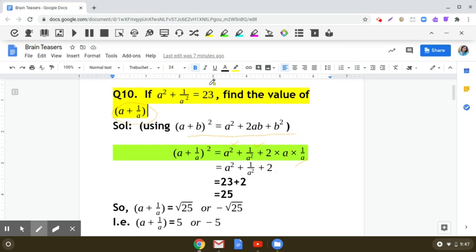Now we are given that a² + 1/a² is 23. So substitute the value here. So (a + 1/a)² will be equal to 23 + 2, that is 25.